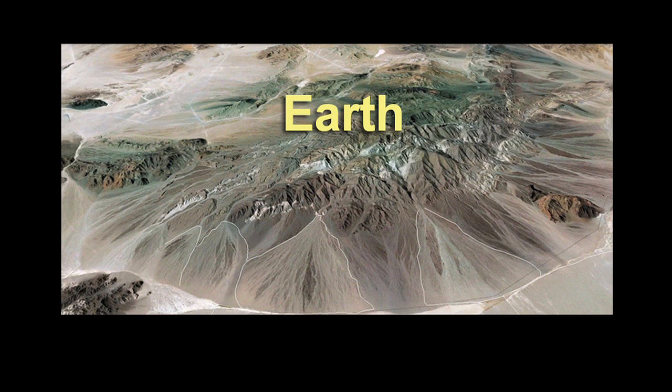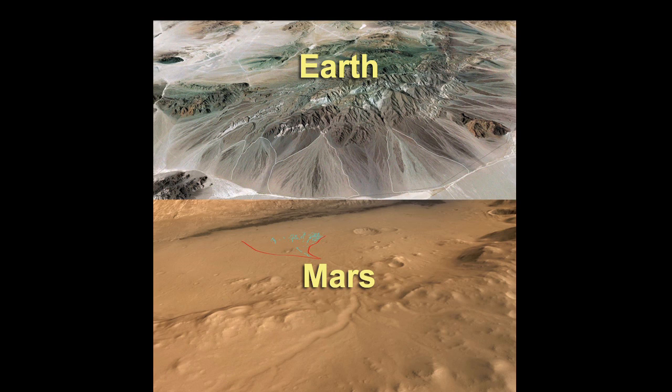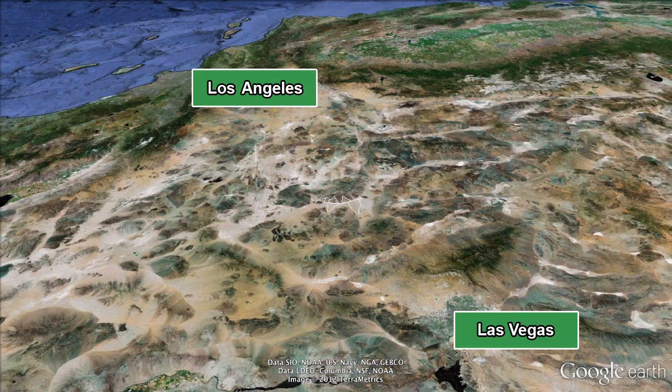In this video, we're going to take a look at fans in Death Valley and explore how they form, and then travel back to Gale Crater and explore the relationship between the fan and the landing site as well. So we'll begin with a flight into Death Valley.